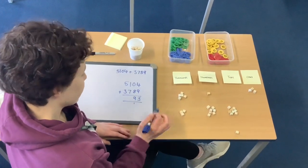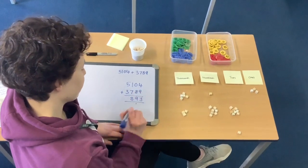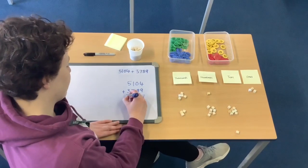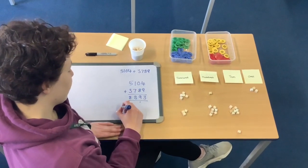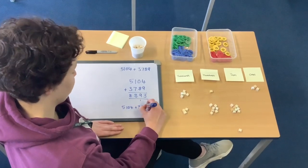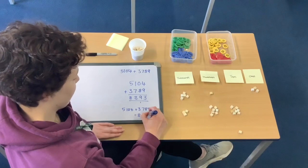Then my hundreds. I've got 1 hundred add 7 hundreds which is 8 hundreds. And then my thousands. Five thousands added to 3 thousands is 8 thousands. So I can say 5,104 add 3,789 is equal to 8,893.